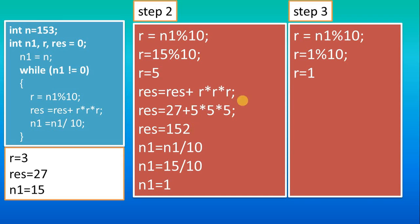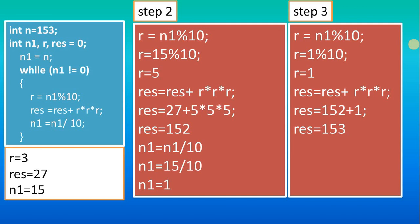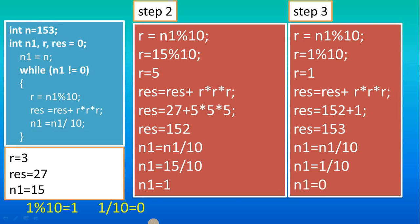In Step 3, we get remainder 1 because n1 is now 1, so 1 % 10 = 1. We add 1 cubed to res, so res becomes 153, which equals the original value — confirming it is an Armstrong number. Then n1 = 1 / 10 = 0, so the while loop ends. The important point is: 1 % 10 is 1 and 1 / 10 is 0. I hope you understood; if not, try working through it on paper to get a clear idea.